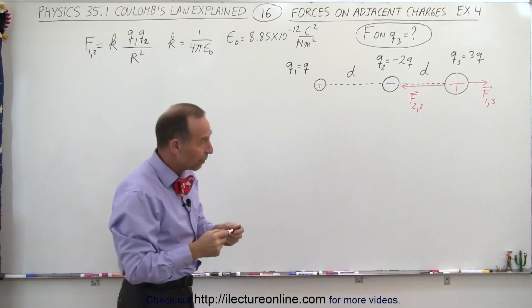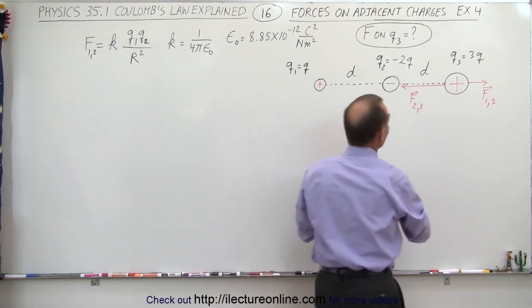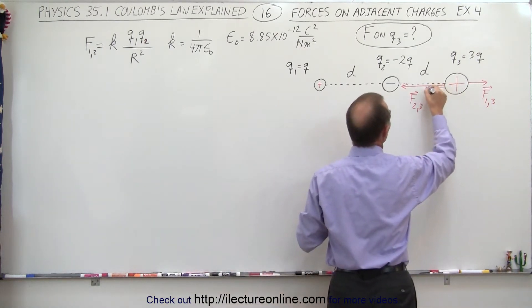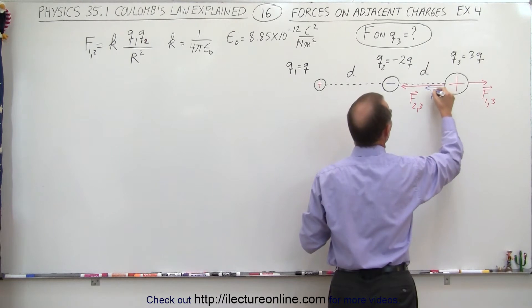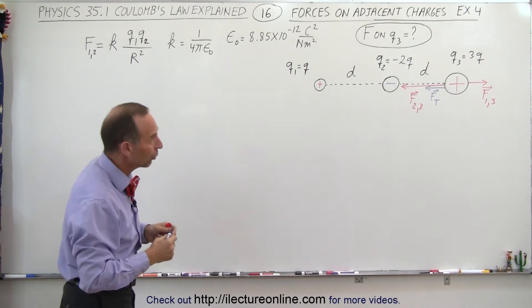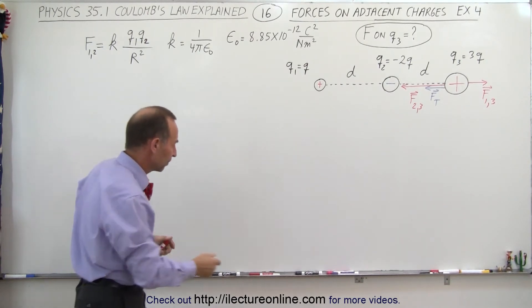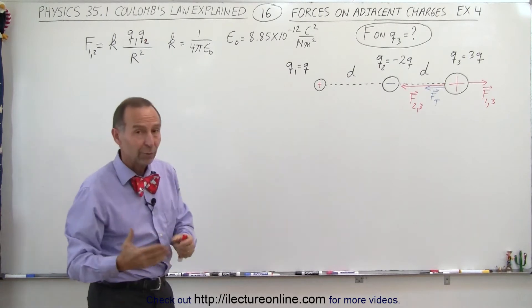You can then see when we do a vector sum, the one to the left will be larger than the one to the right, and the total will then be in this direction, force total, due to the presence of the other two charges. And that's what we're trying to find, the force on the third, because of the presence of the first and the second charge.